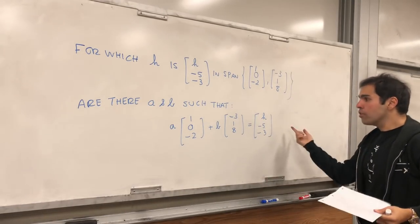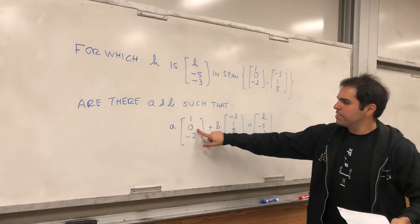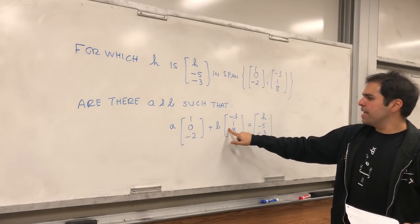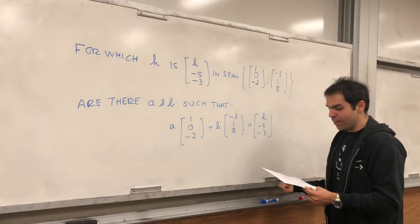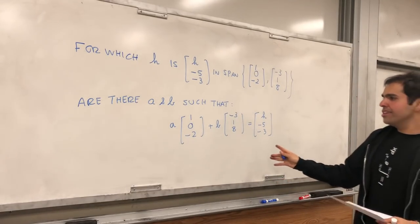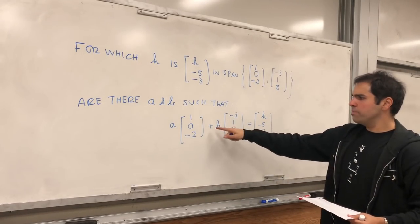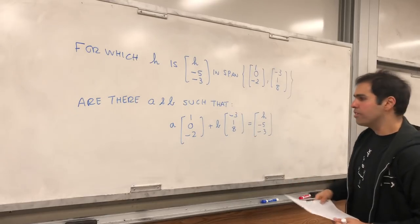In other words, can you take A steps in this direction and B steps in this direction to attain this vector [h, -5, -3]? And notice, equivalently, it just means, is this system consistent?